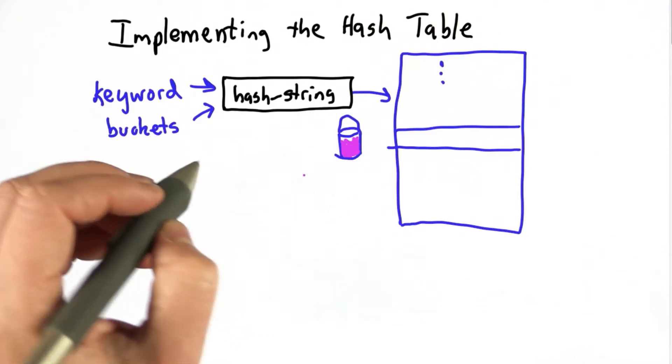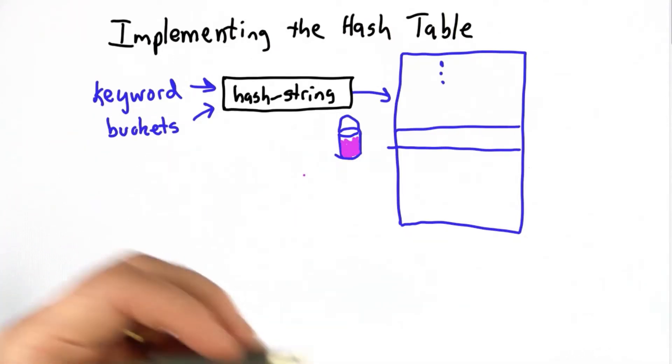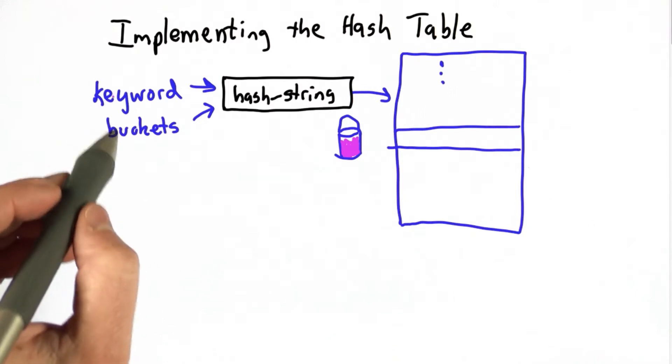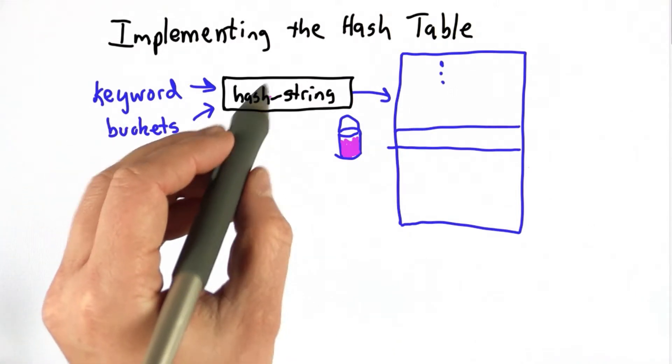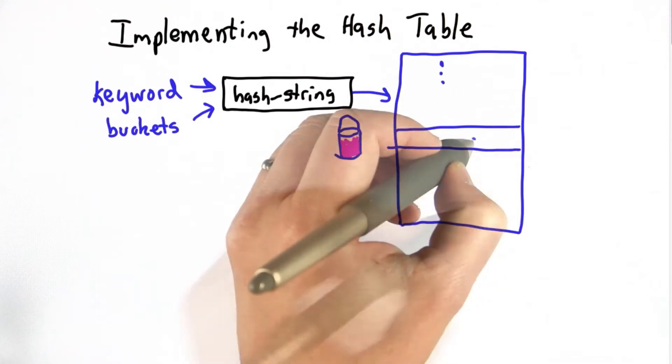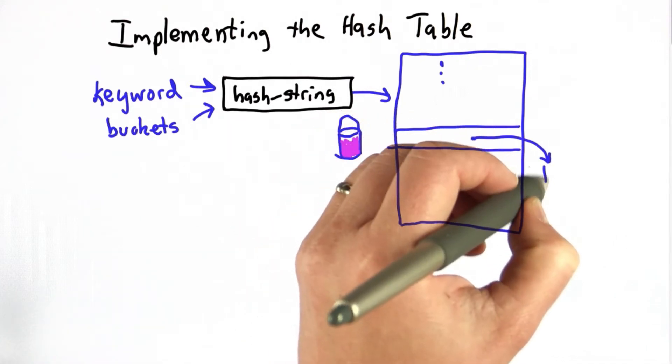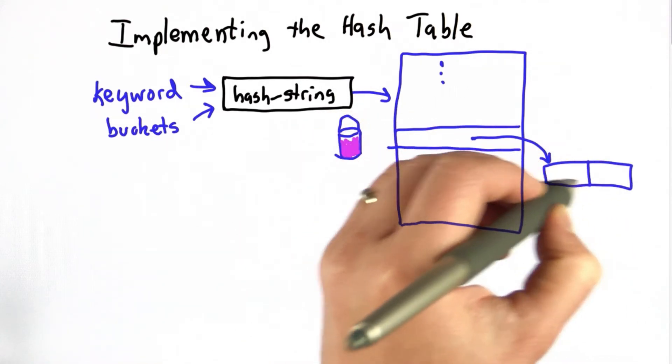I hope everyone understands the main idea behind the hash table now. Our goal is to map a keyword and a number of buckets using a hash string function to a particular bucket, and that bucket will contain all of the keywords that map to that location.